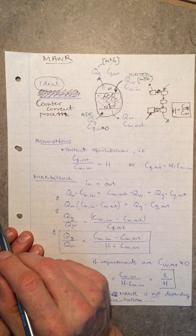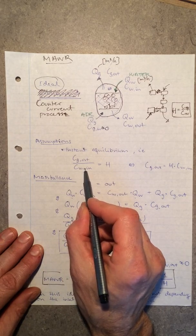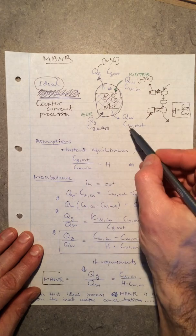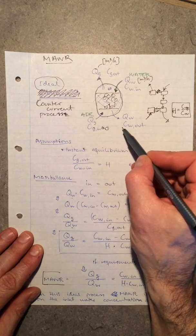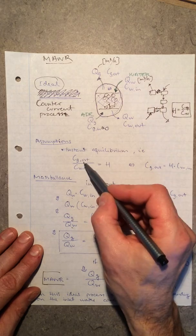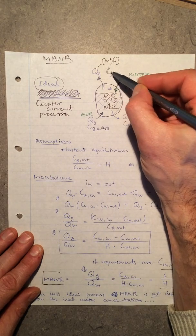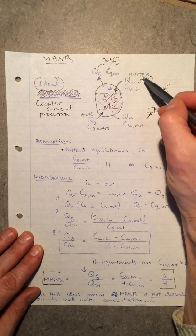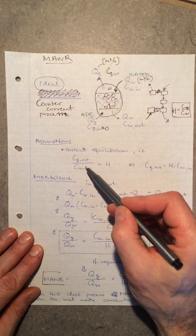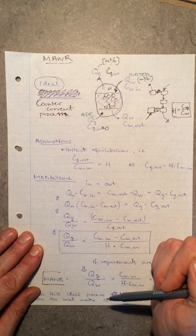My assumption is instant equilibrium — that means that at any point in the process I will have equilibrium between water and gas, so Henry's law applies. If I'm looking at what's going out of the gas in the vessel, the concentration of the substance in the gas going out is in equilibrium with what is in the water coming in. The equilibrium constant here is Henry's law constant.